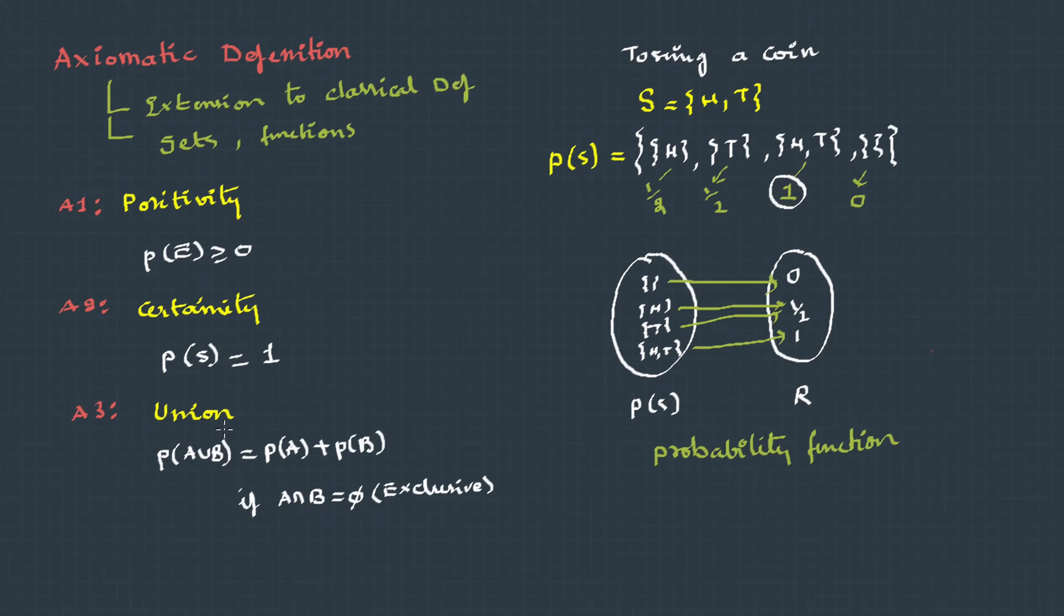The third one, the axiom of unions, which says that if two elementary events A and B are mutually exclusive, then the probability of union of A and B is probability of A plus probability of B.